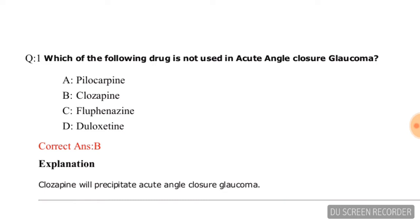Question number one: Which of the following drugs is not used in acute angle closure glaucoma? Options are pilocarpine, clozapine, fluphenazine, and dexamethasone. The correct answer is option B, that is clozapine.